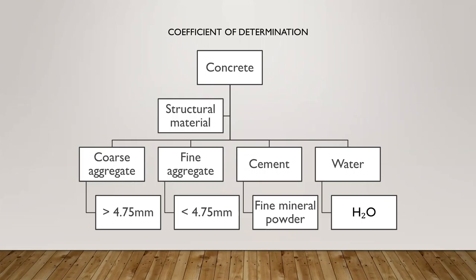Concrete is a structural material used in construction and is a mix of cement, water, and aggregate. Cement is a fine mineral powder and the purpose of this material is to bind the concrete. The amount of water in concrete controls the consistence of the mixture — depending on the water, if the concrete will have good workability, permeability, and durability.